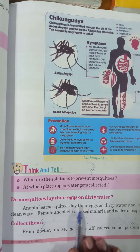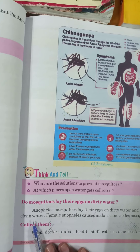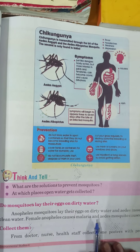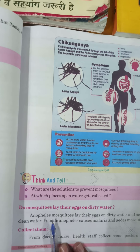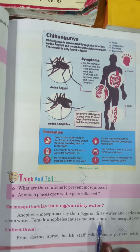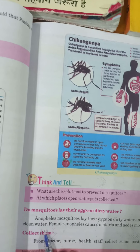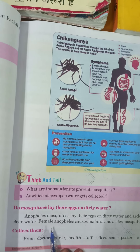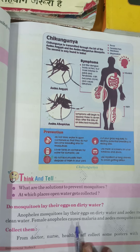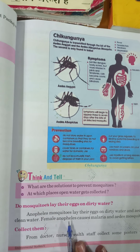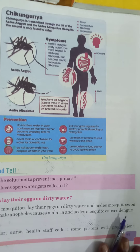Anopheles mosquitoes lay their eggs in dirty water, and Aedes mosquitoes lay eggs in clean water. Female Anopheles causes malaria and Aedes mosquitoes cause dengue. यानि जो Anopheles यानि malaria के मच्छर होते हैं, ये गंदे पानी में अपने अंडे देते हैं, और जो Aedes के मच्छर होते हैं वो साफ पानी में अपने अंडे देते हैं। Female Anopheles के कारण हमें malaria होता है, और Aedes मच्छर से हमें dengue हो जाता है।